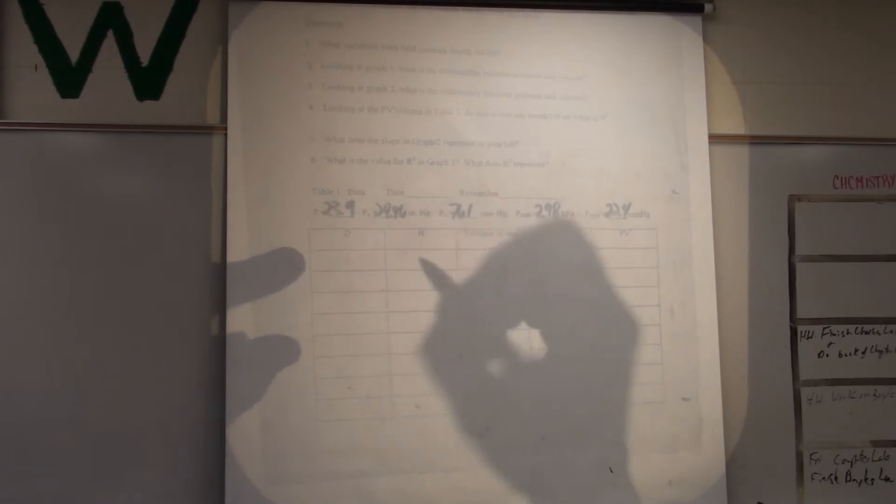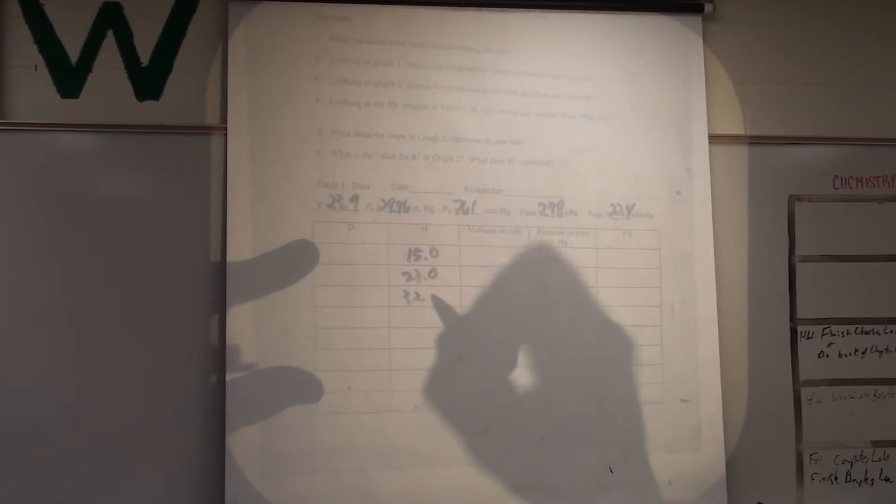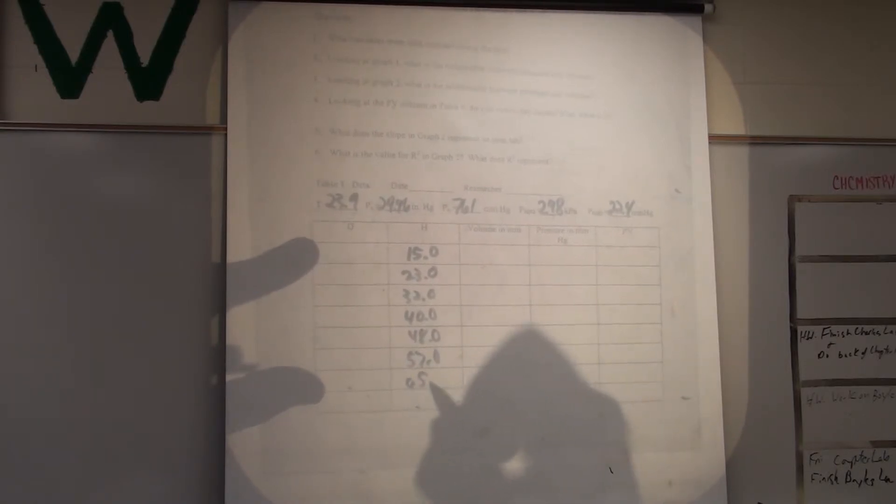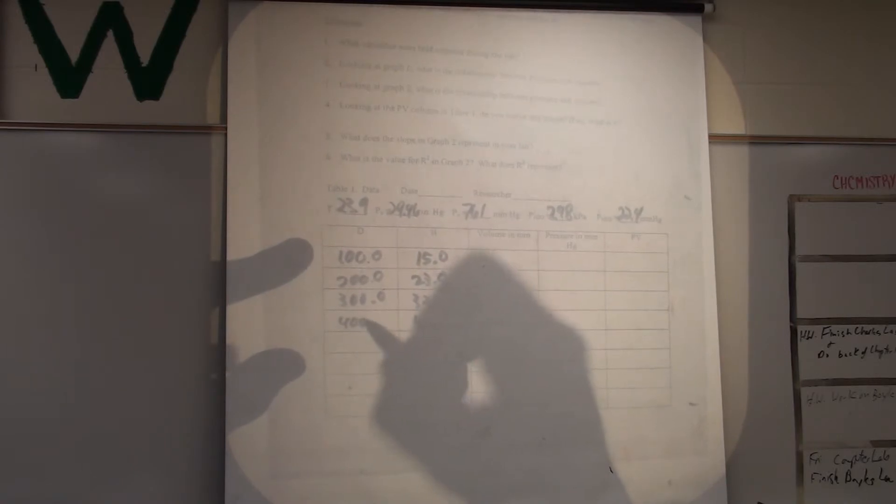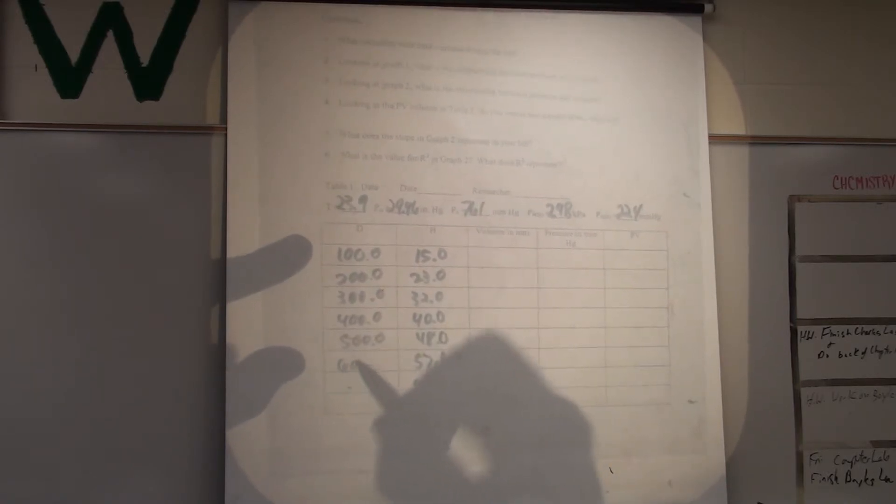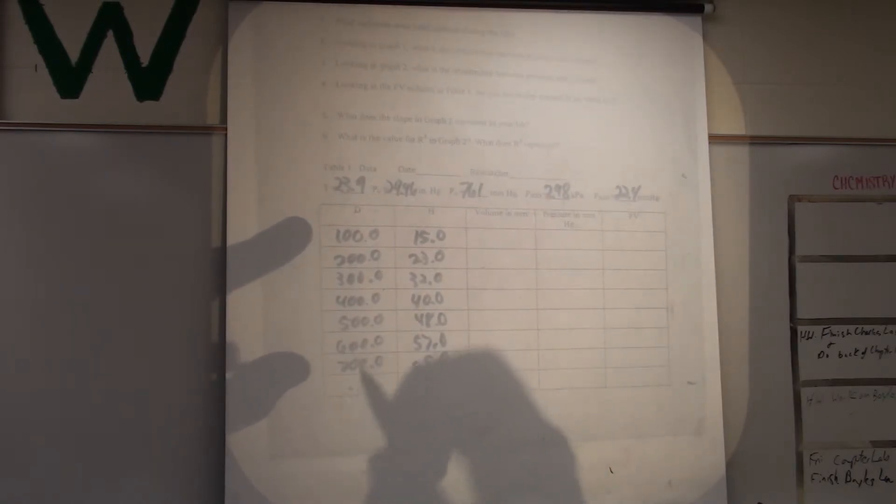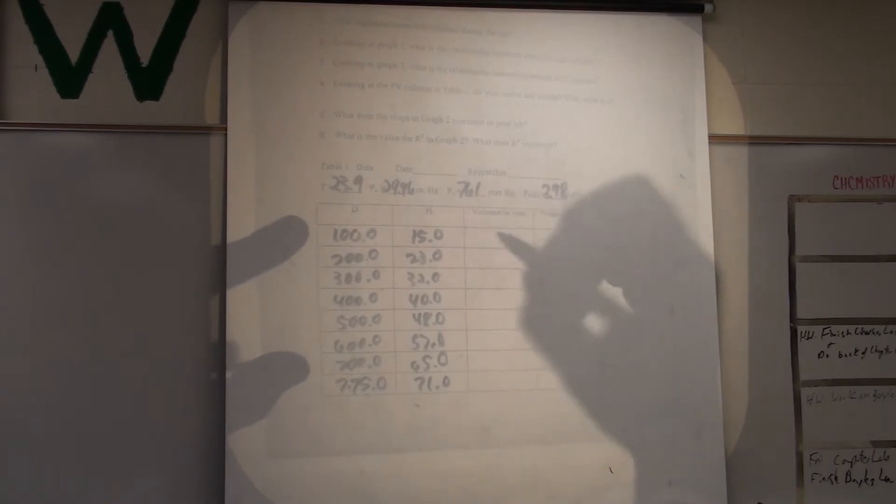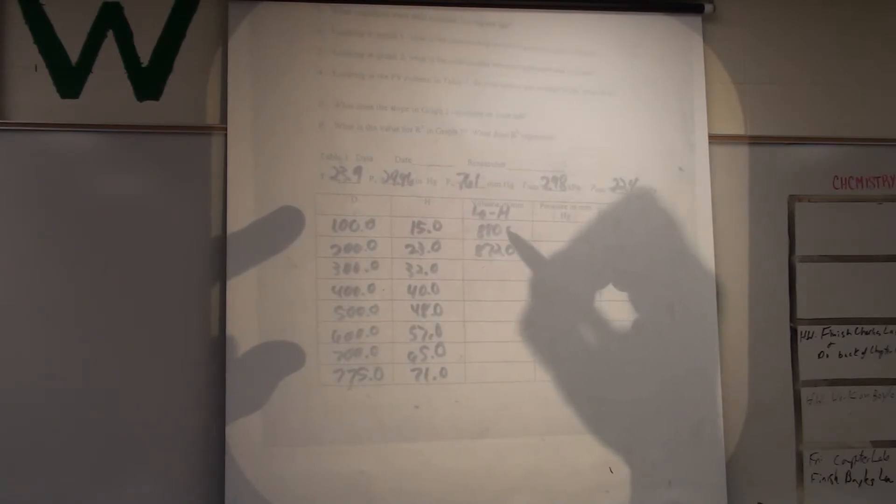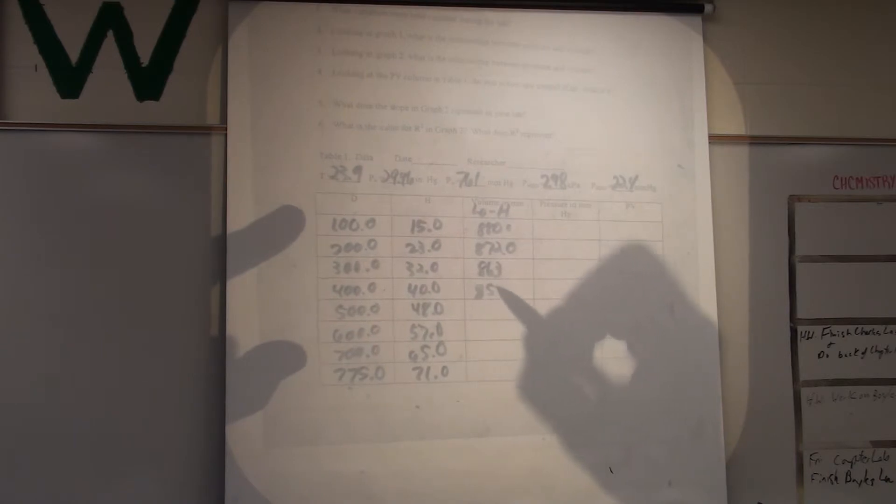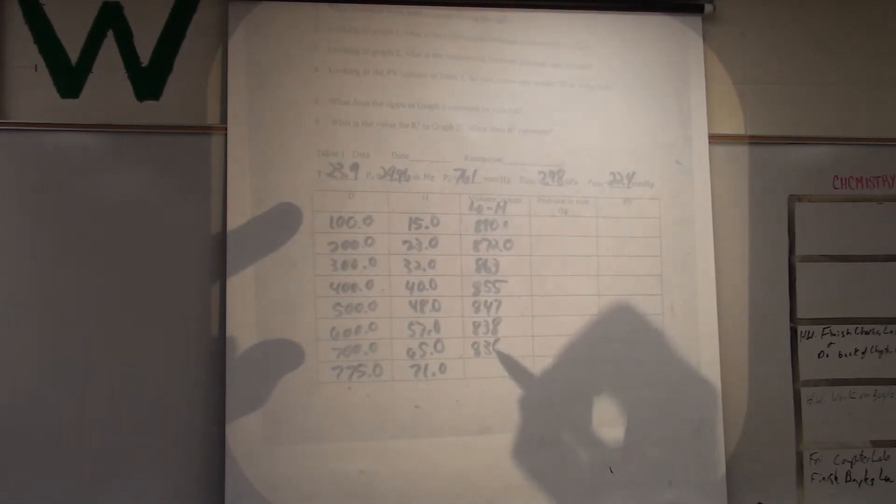Rachel, could you read off your ages for me? 23, 15, 23, 32, 40, 48, 57, 65, 75, 75, and 75. What was our volume? We calculated the volume yesterday, right? 880, 872, 863, 855, 847, 838, 830, and 824.